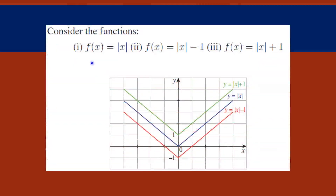Consider the function: f(x) = |x|, that is the blue color curve. The second one is f(x) = |x| - 1 — subtracting 1 shifts it downward by 1 unit. And f(x) = |x| + 1 — adding 1 shifts it upward.